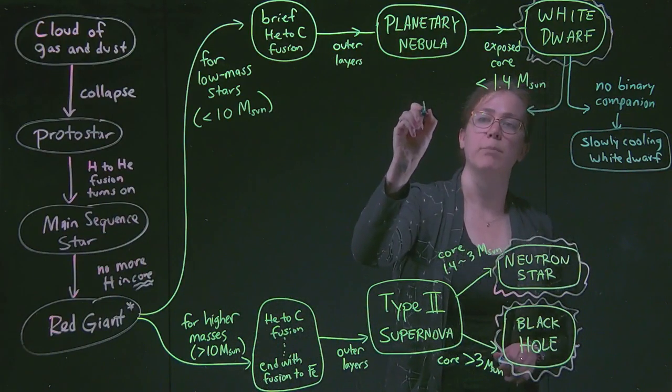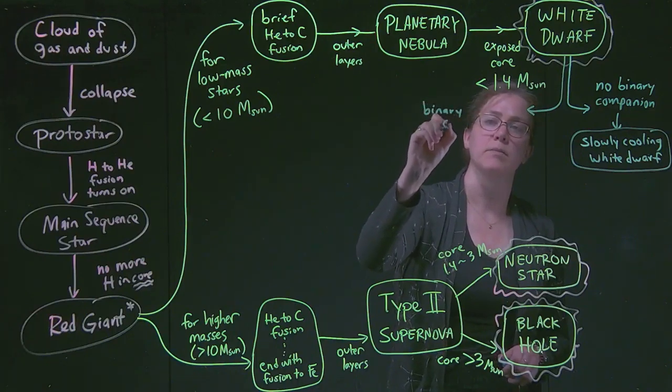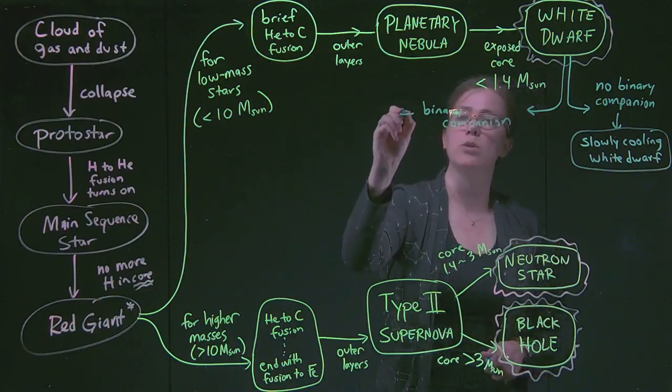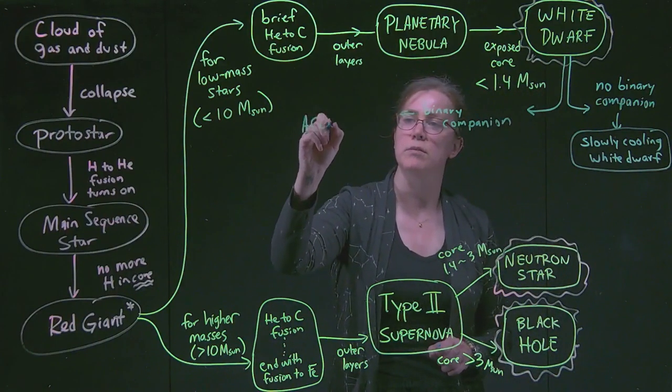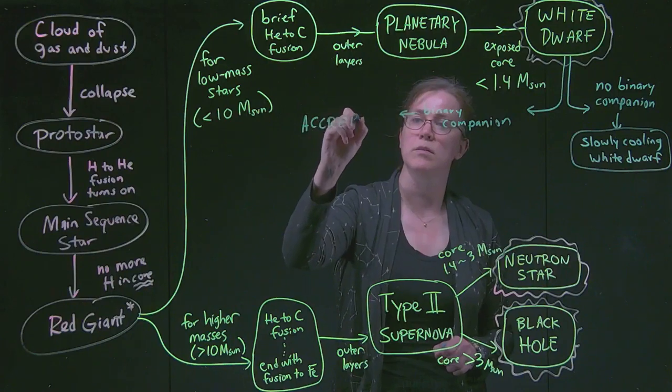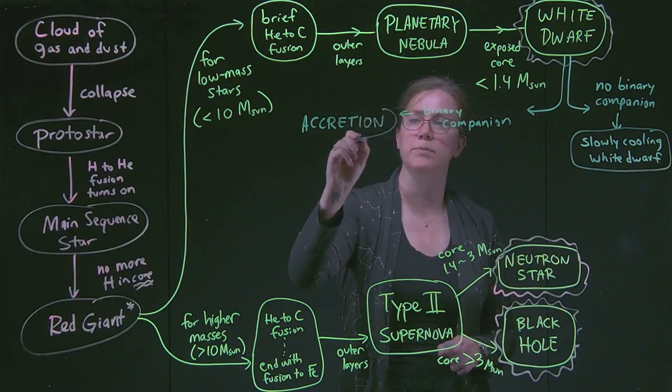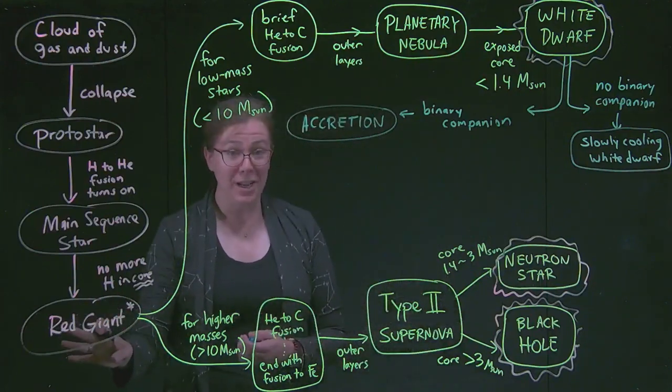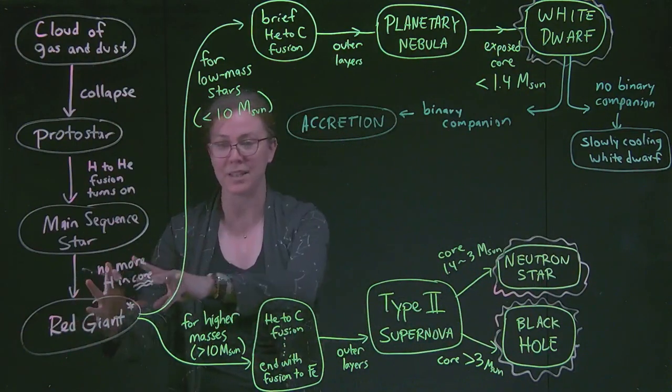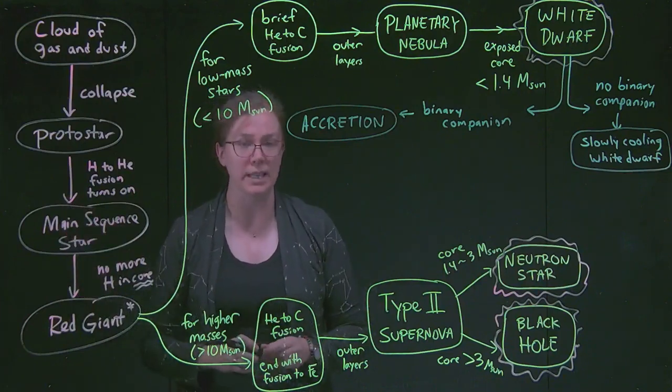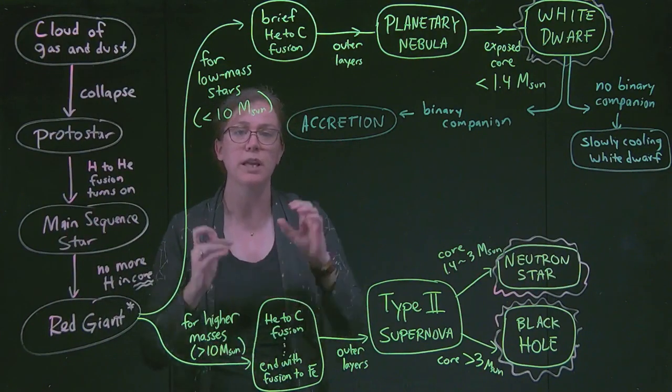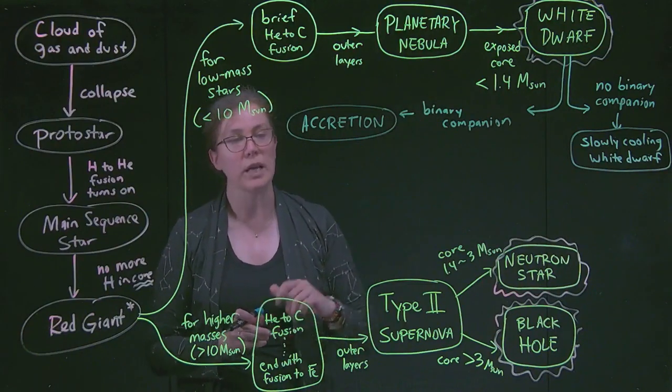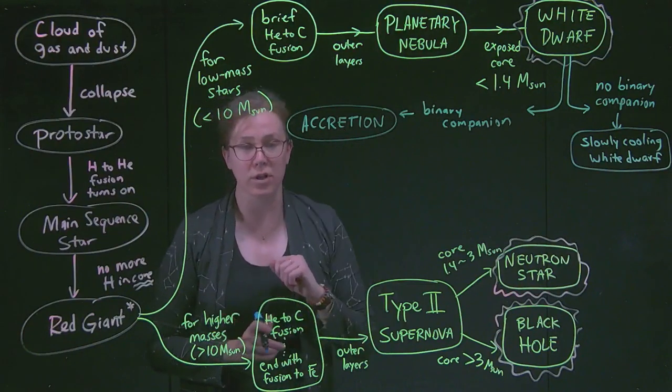If we do have a binary companion, then we will go through the process of accretion when that binary companion goes through its red giant face. When the binary companion gets really big and fills its space around that additional star, it will have extra material that kind of flows onto the white dwarf. And we get to gain extra material from there.